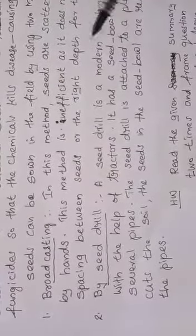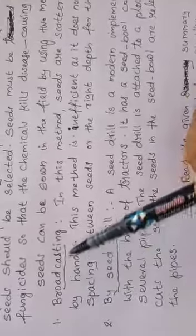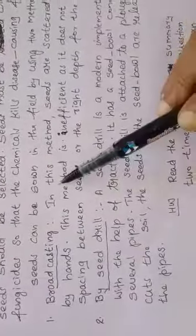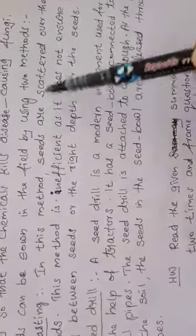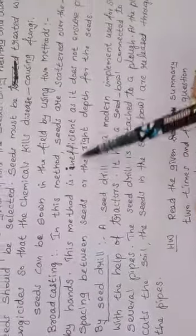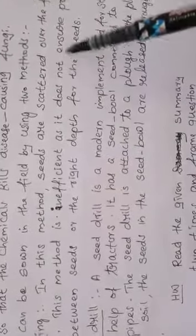Seeds can be sown in the field by using two methods. In this method seeds are scattered over the field by hands. This method is inefficient as it does not ensure proper spacing between seeds or the right depth for the seeds.